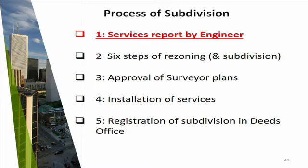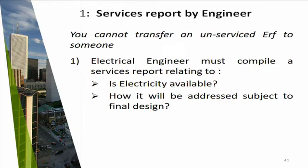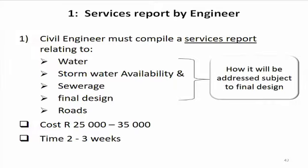The steps for subdivision include the rezoning process plus four additional steps. The first additional step is an engineer services report. We need this because when we're done we want two stands, and it might be that we only have an electricity connection in one corner. The engineer determines where all services are currently located on the property and how they will be amended to accommodate two stands after subdivision. This report costs about 35,000 Rand and takes about two to three weeks to compile.